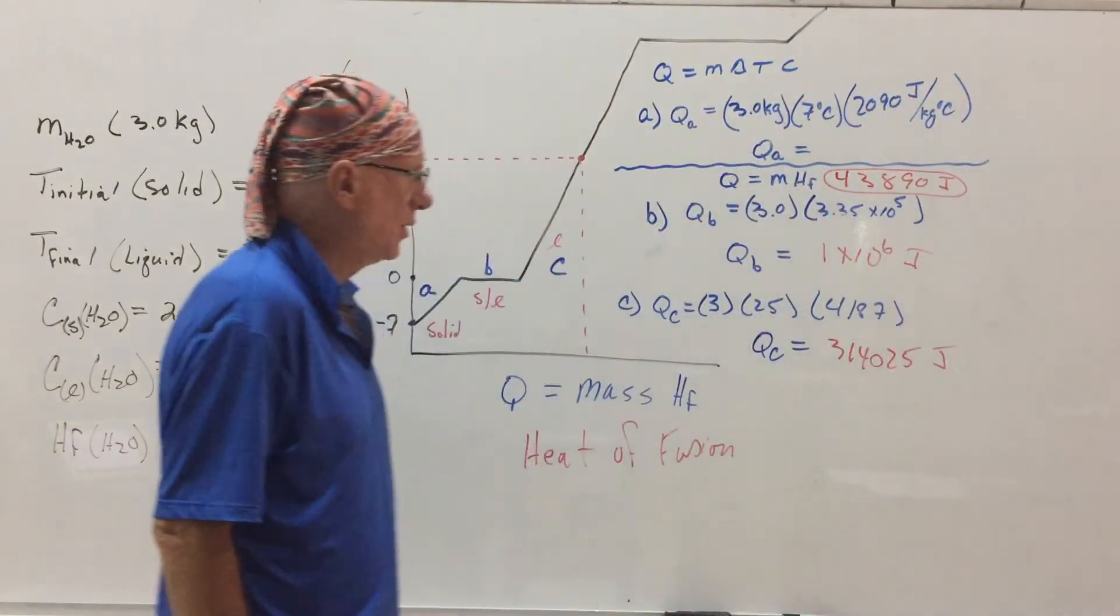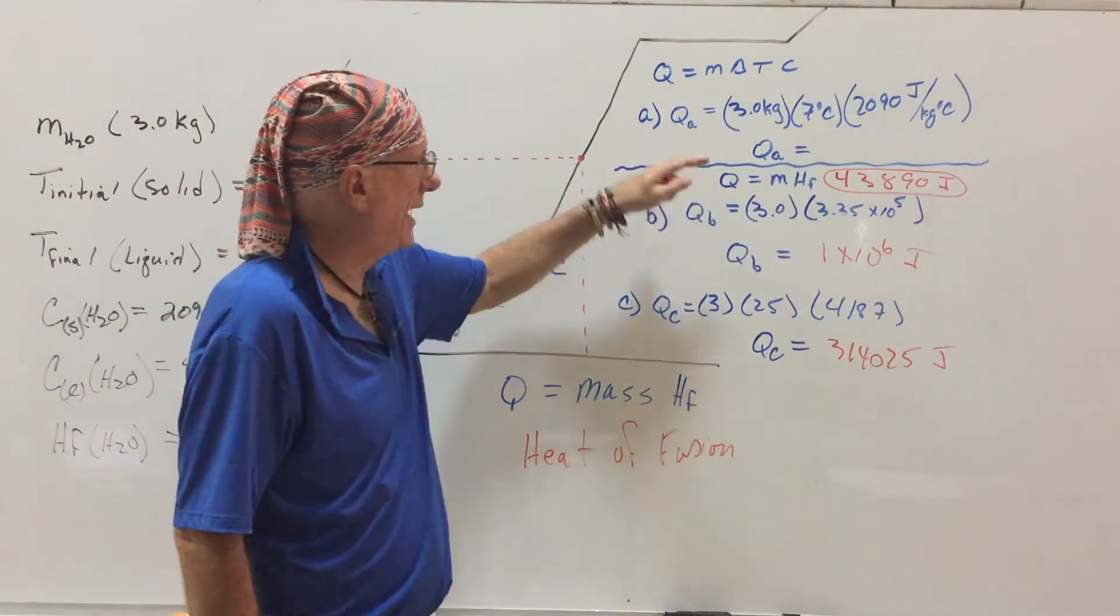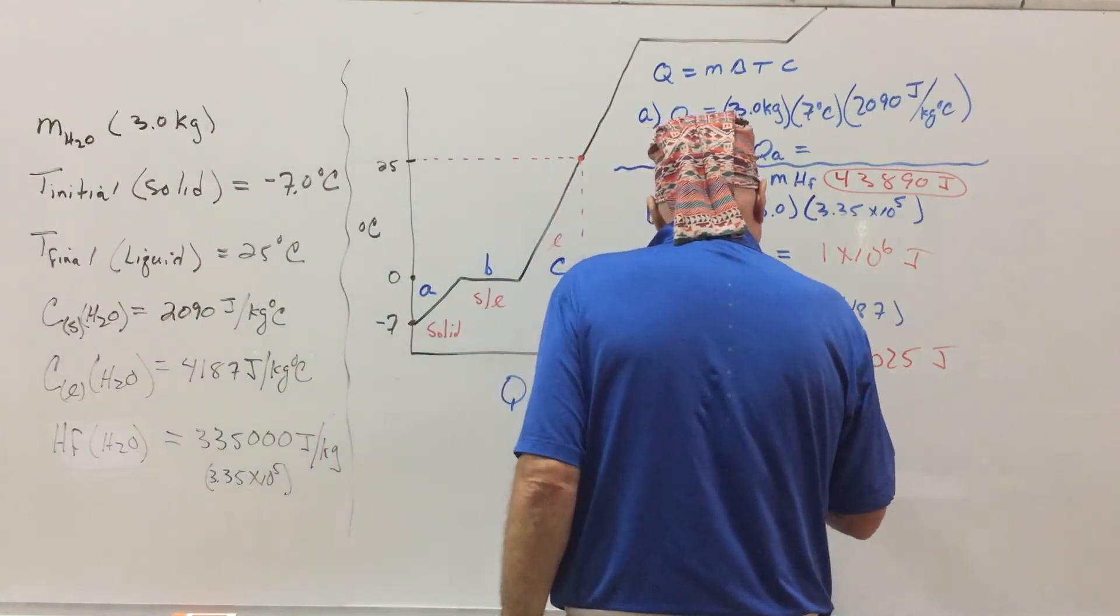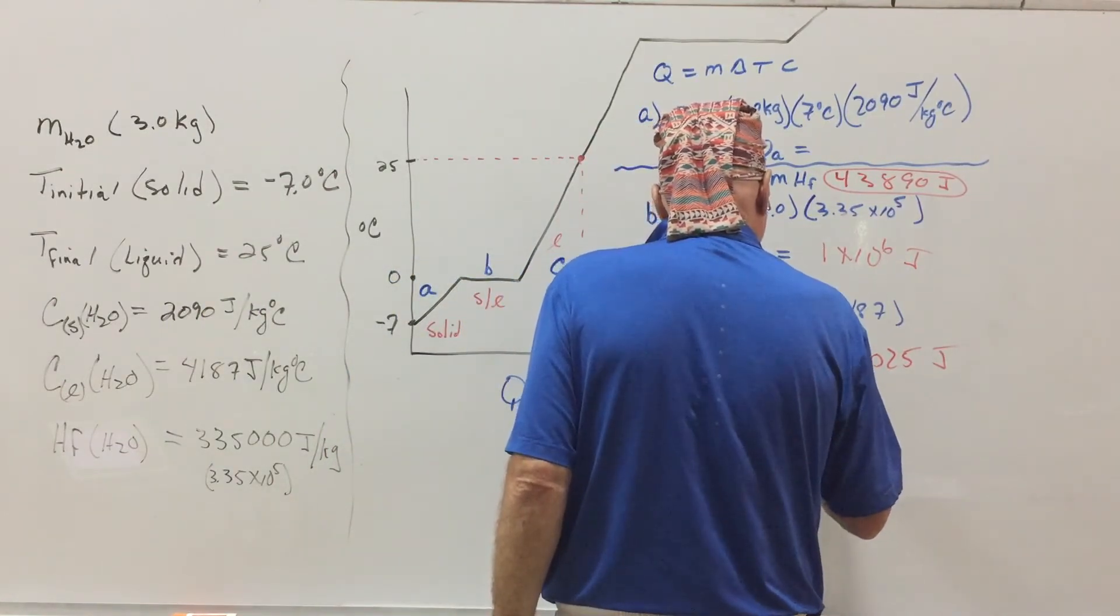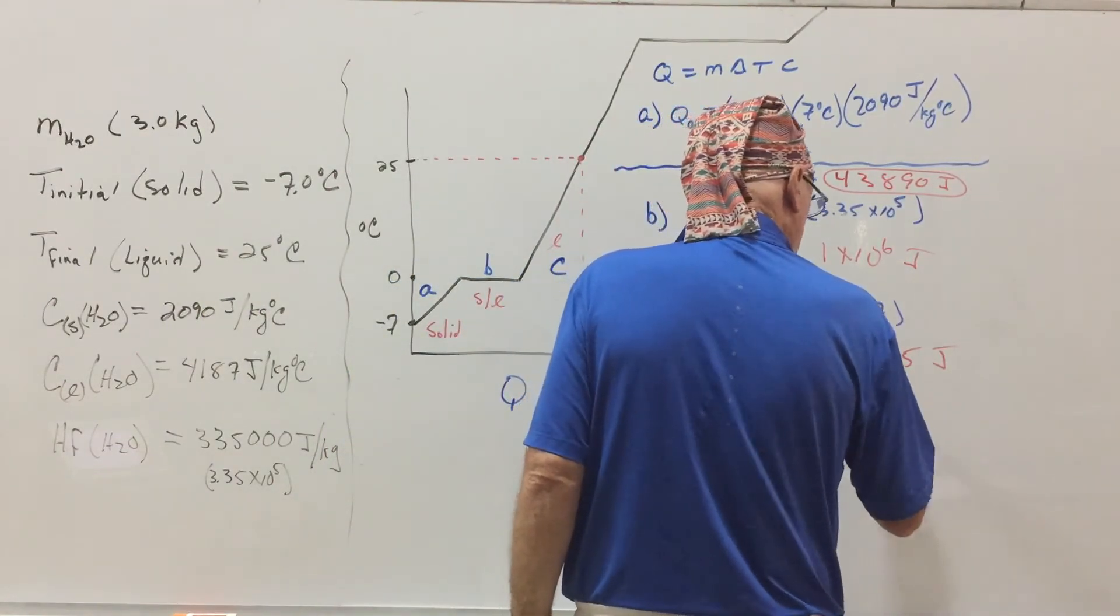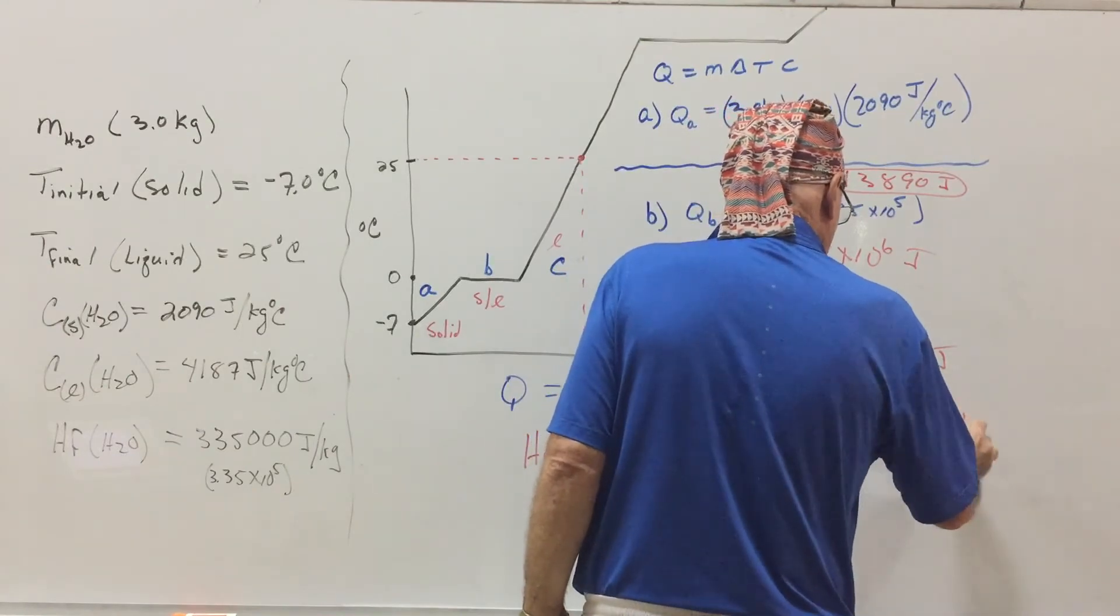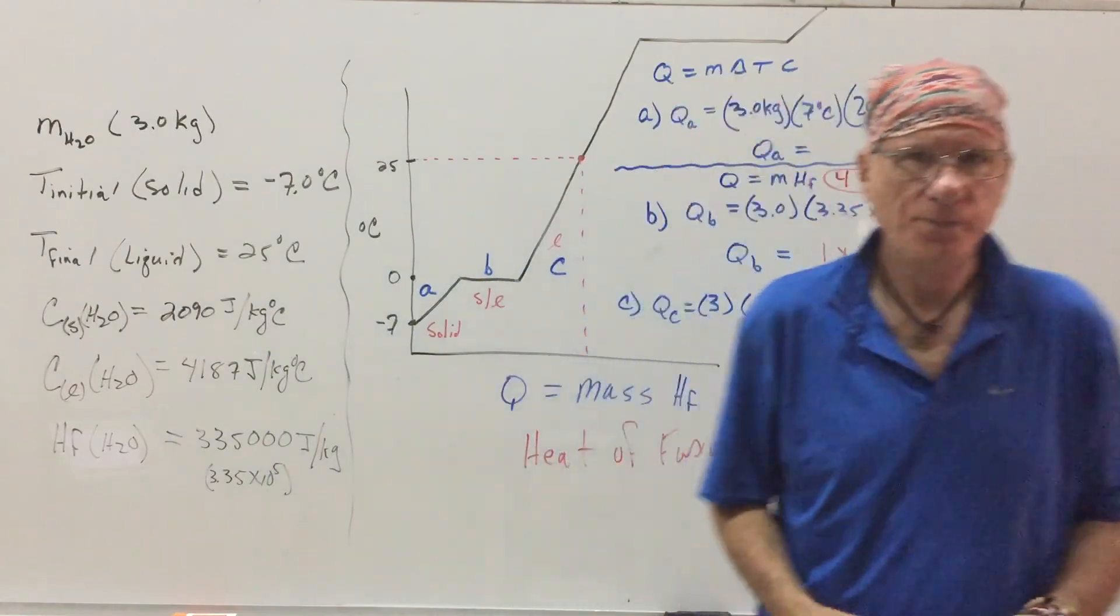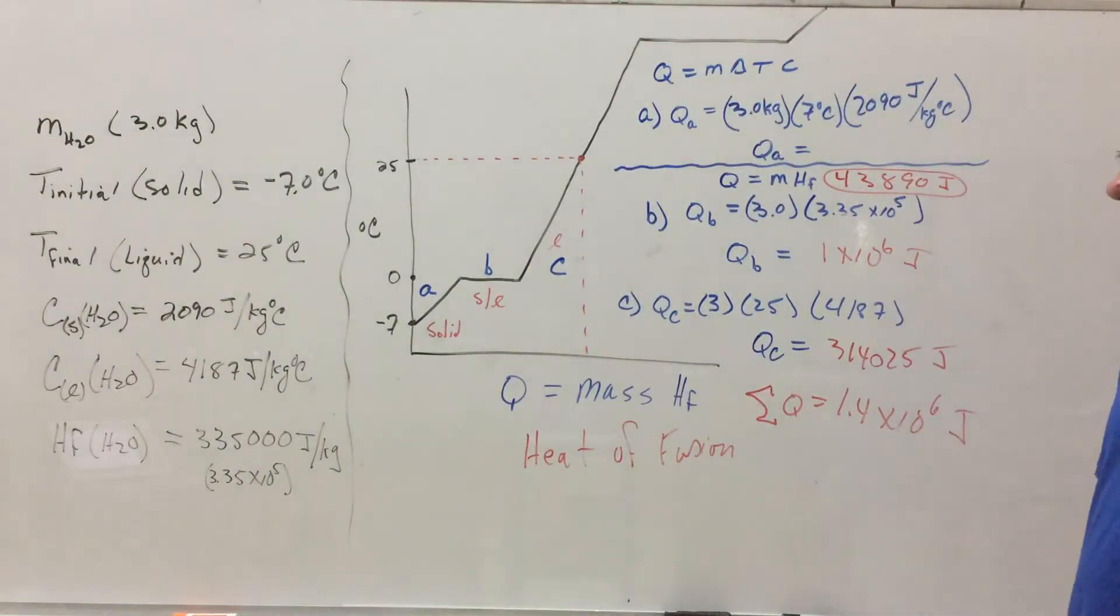And then when you add it all up, so you're going to add this heat plus this heat plus this heat, so you're going to get your total heat is going to equal 1.4 times 10 to the 6 joules. And that's it. Look that over, and email me if you have a question, and that should be pretty straightforward.